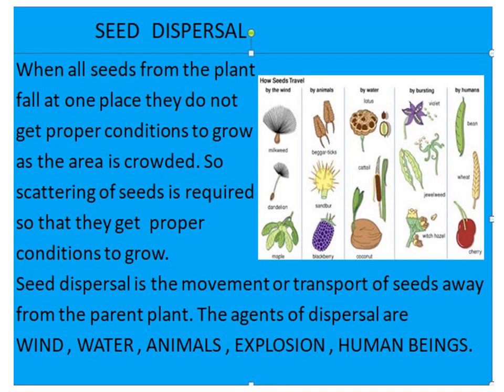Seed dispersal. When all seeds from a plant fall at one place, they do not get proper conditions to grow as the area is crowded. So scattering of seeds is required so that they get proper conditions to grow. Seed dispersal is the movement or transport of seeds away from the parent plant. The agents of dispersal are wind, water, animals, explosion, and human beings.